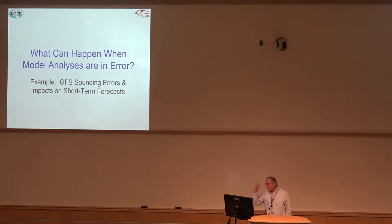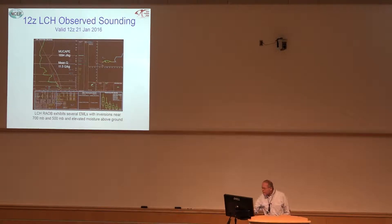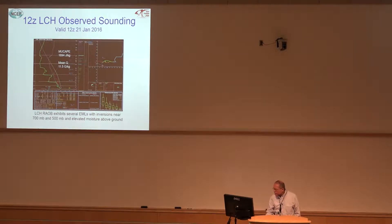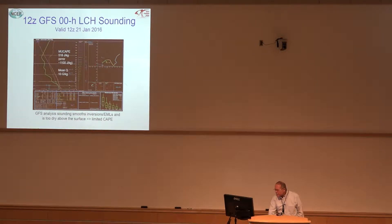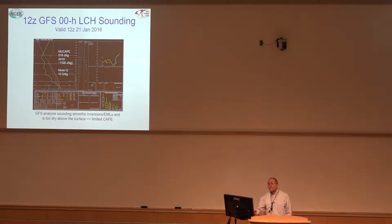How about another case? We'll look at a cool season case with the GFS. This is January 21st, 2016 — not the January 21st, 2017 outbreak, but we had severe weather on this day too. Here's the 12Z Lake Charles sounding. It's got some elevated instability with several layers of steep lapse rates — almost 1700 joules of instability from lifting a parcel just above the surface. What did the GFS initial sounding look like? Compare them — the lapse rates are quite a bit different, and look at the moisture trace: it dries out in the model. So instead of almost 1700 joules, it's got 518 joules — an error of about 1100 joules right at the start time.